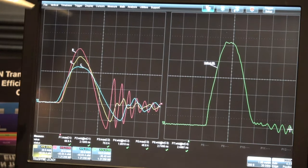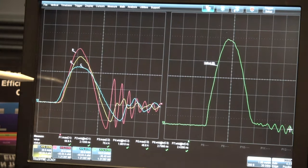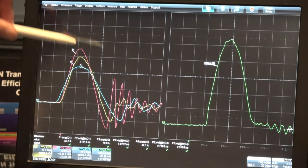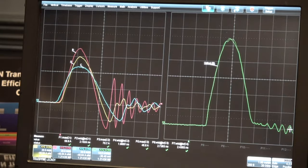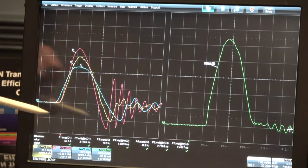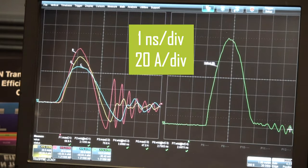If we take a look at the waveforms, on the left-hand side I'm showing the laser diode currents in each of the three different lasers, and on the right-hand side I have the optical output. If we take a look at the scale on this side, it's one nanosecond per division and 20 amps per division.